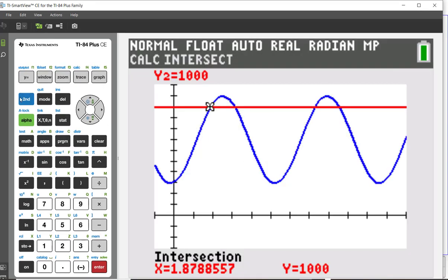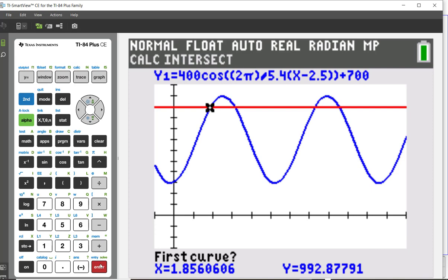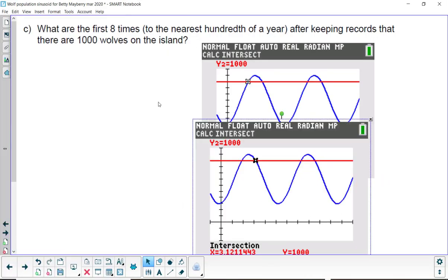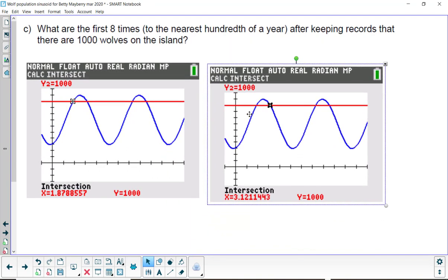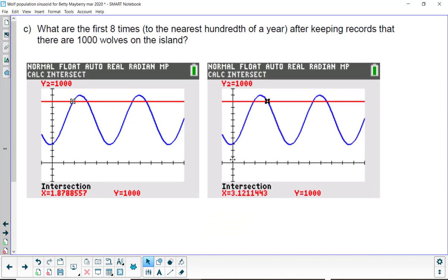I can find the other point of intersection. Again, by using second trace, which is calculate. And number five, which is intersect. Same curve. First curve, yes. Second curve, yes. But I want the one that's closer to this point, right here. So, I'll press enter. And there's my other one. And let's go ahead and pull that one off. And so, here are two of them. I think you have a pretty good idea how we could find the other six. We could also do it algebraically using the period.